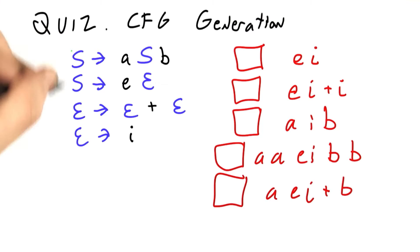The start symbol is S. It's the first one to appear in our grammar. One possibility is S goes to EE, which goes to EI using Rule 2 and Rule 4. So this string is definitely in the language of our grammar.